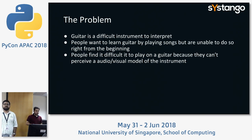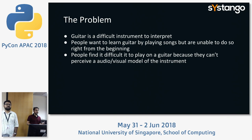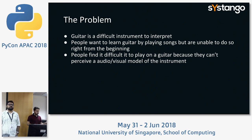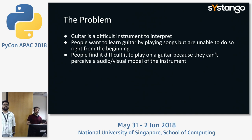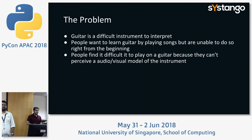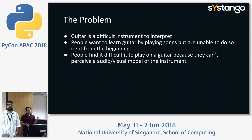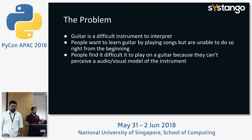Guitar is a difficult instrument to learn — that's the perception, and it's generally the case with most musical instruments. People want to learn things quickly and get results fast. They start with music theory, get too deeply dwelled into the subject, and don't get results as expected because they lack a proper audio-visual model. Our problem was exactly this — because once there is a good audio-visual model, it gives a good feedback mechanism, and people can easily learn and retain whatever they have learned.